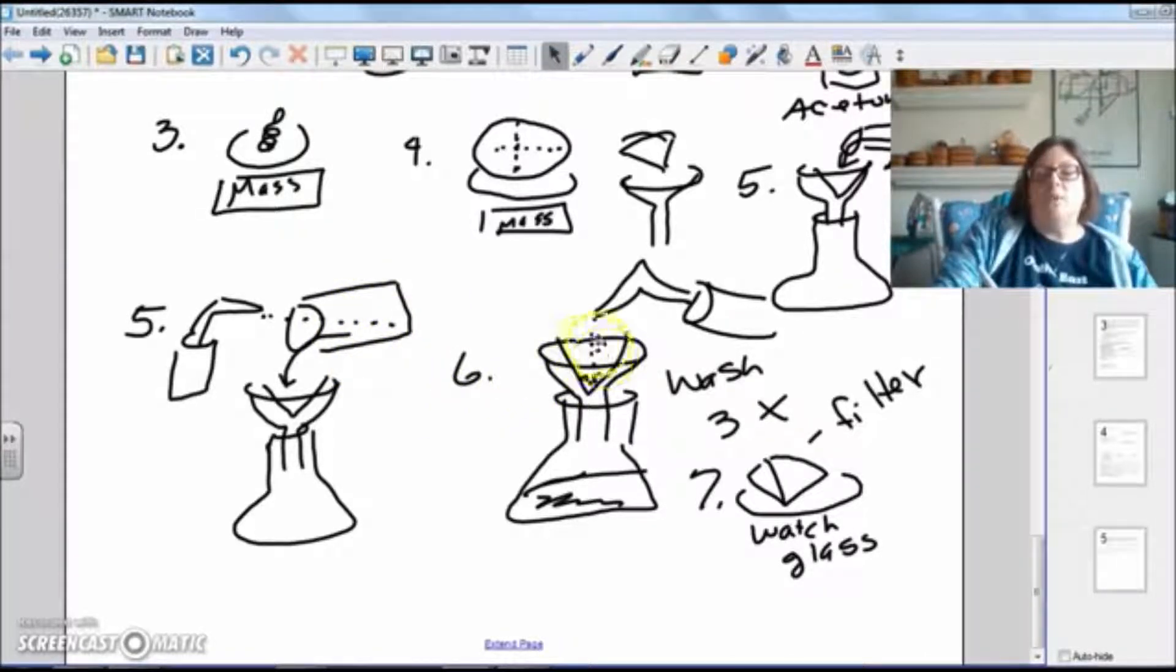Step six says to wash it. What that means is you fill the filter paper up almost to overflowing with distilled water and let it drain through, and you're going to let it drain through three times. After that, carefully take your filter paper out. You can kind of open it up. You don't need to open it all the way, although you can, and you're going to set it on a watch glass.